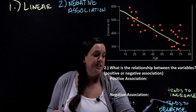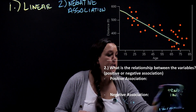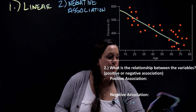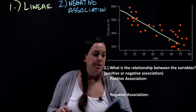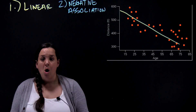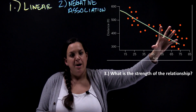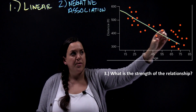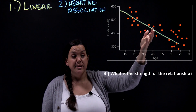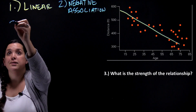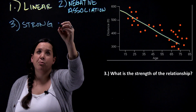The third area to look at is how strong the association is between the two variables — how tight is the pattern? The tighter the pattern, the closer the points are to one another, and the stronger the relationship. This particular scatterplot shows a fairly tight relationship, so I would describe it as a strong or moderately strong relationship.